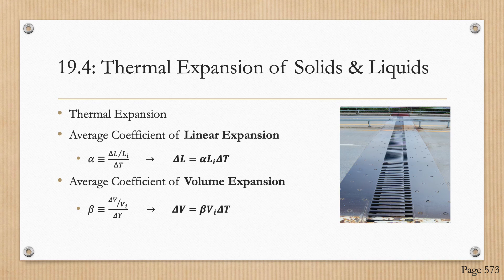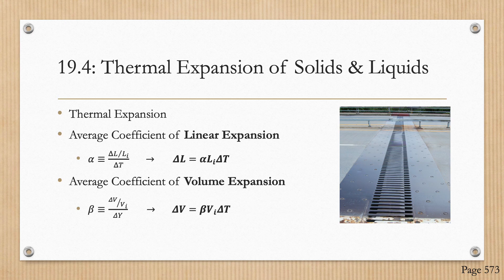Moving on, we discuss the thermal expansion of solids and liquids. Thermal expansion is a consequence of the change in the average separation between atoms in an object. The average coefficient of linear expansion is defined as alpha equals delta L over L-initial divided by the change in temperature, or for calculation: delta L equals alpha times L-initial times delta T. Since linear dimensions change with temperature, surface area and volume change as well. The average coefficient of volume expansion is beta equals delta V over V-initial divided by delta T, or delta V equals beta times V-initial times delta T.